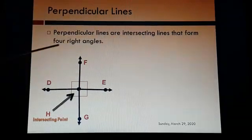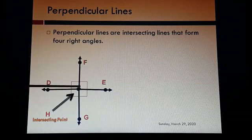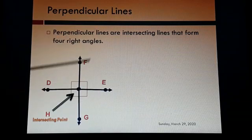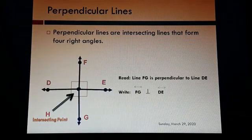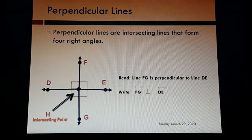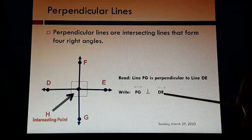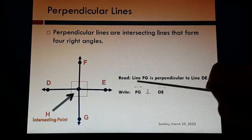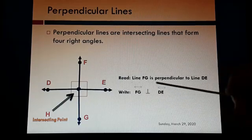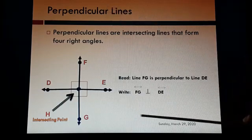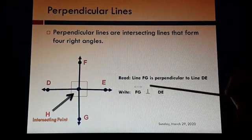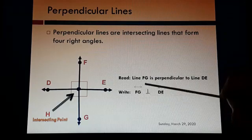So these lines are intersecting? Yes. Four right angles? Yes. So are these two lines perpendicular lines? Yes. How to read: line FG is perpendicular to line DE. How to write: with the symbols. Line FG is perpendicular to line DE — the line symbols are here, and the perpendicular line symbol must be written between them. Don't forget it.